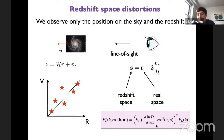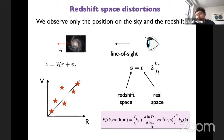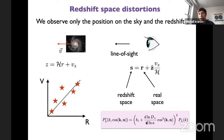Plugging the linear theory expression for the line-of-sight velocity v_z into the coordinate transformation produces an additional contribution to the power spectrum proportional to the logarithmic growth factor f of perturbations. This allows you to measure f, which helps constrain things like modified gravity or neutrino masses — it's very important.